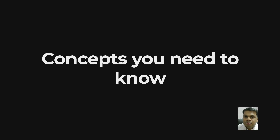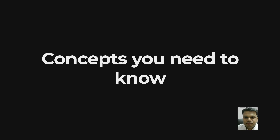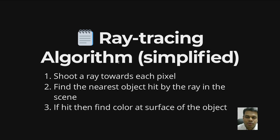Unlike in other problems, you need to know certain concepts before you go forward. The ray tracing algorithm is quite complex and recursive, but for our subproblem we are trying to make it in a simplified fashion. Step one: we will shoot a ray towards each pixel. We will find the nearest object hit by the ray in that scene. And if an object is hit, we need to find the color at the surface of that object at the hit position. If it's not getting hit, it just goes straight through — we'll assume it's a black color, empty space.